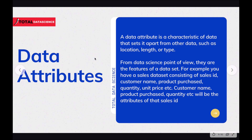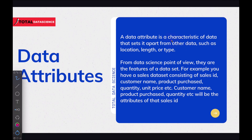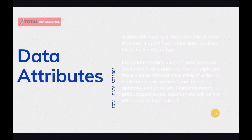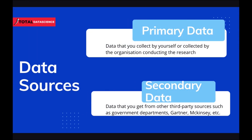So attributes are basically the characteristics of the data — it can be location, length, type, age, education, or marriage status. These are what we refer to as data attributes. I hope you now have a better sense of these concepts. In the next video, we're going to talk about the various sources of data.